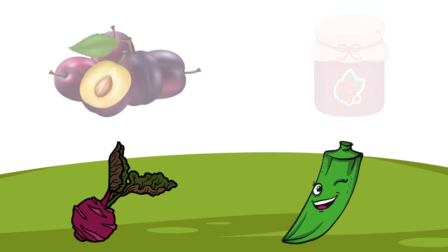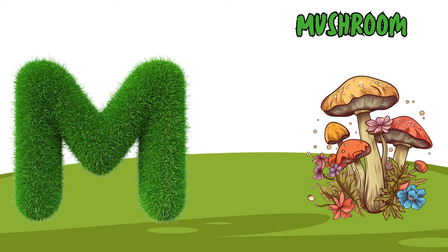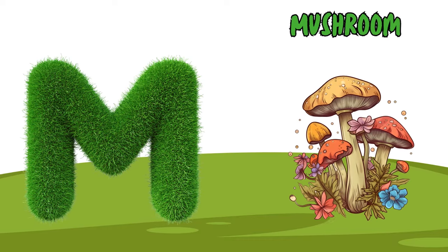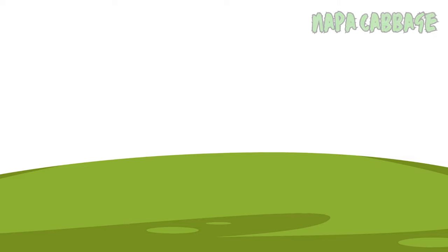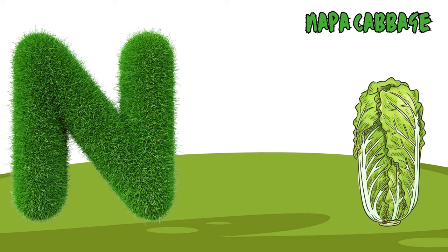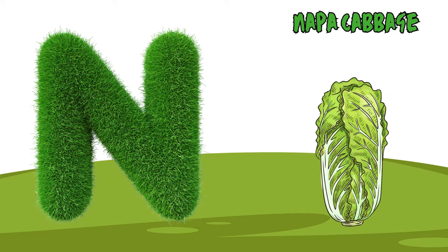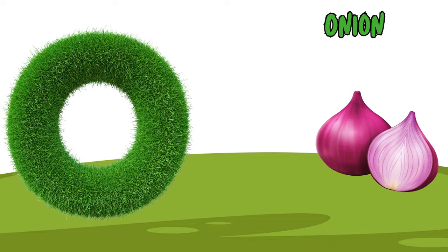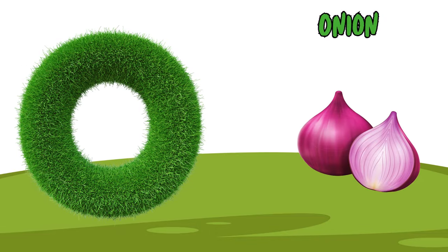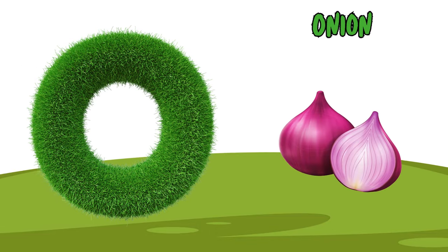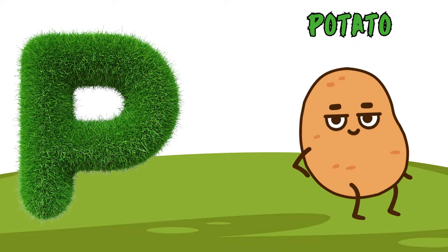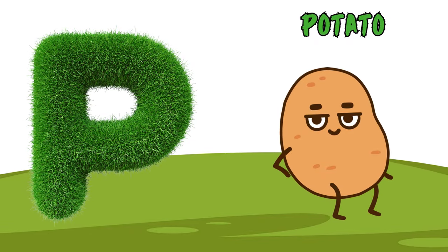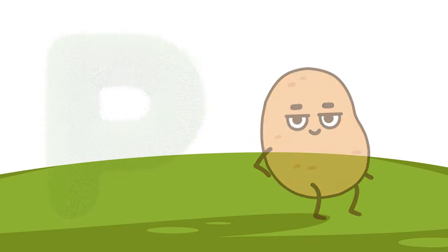M is for mushroom, m-m-mushroom. N is for napa cabbage, n-n-napa cabbage. O is for onion, o-o-onion. P is for potato, p-p-potato.